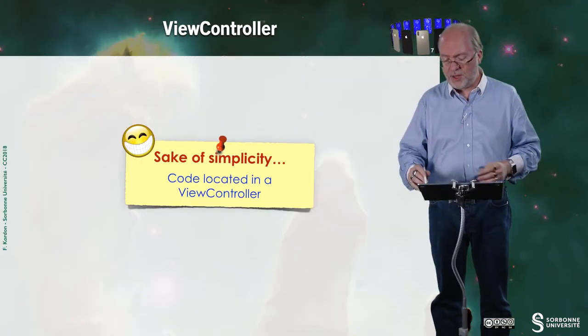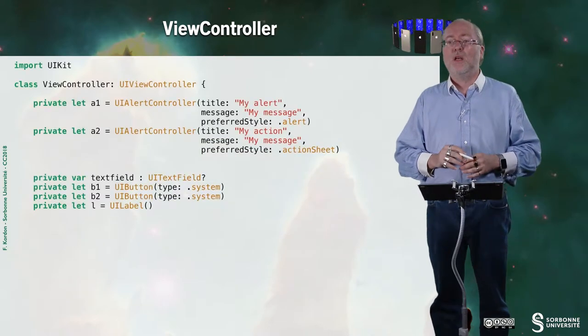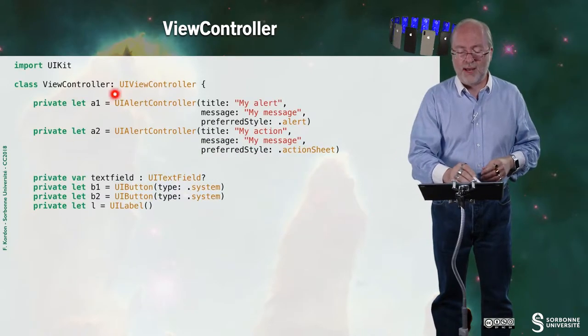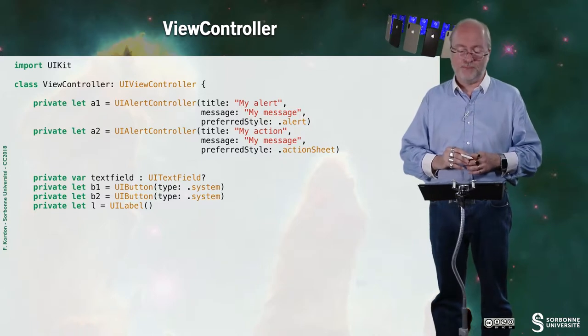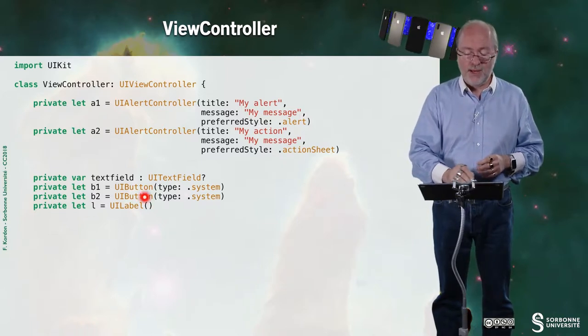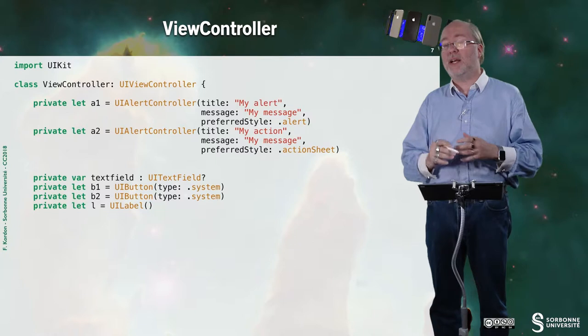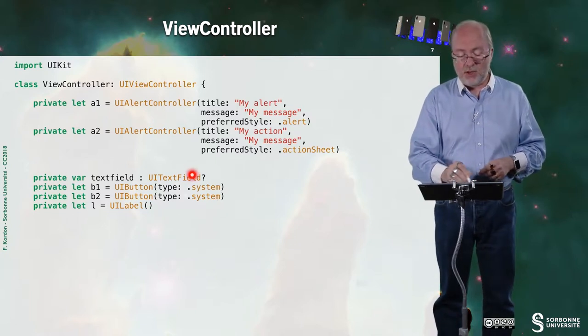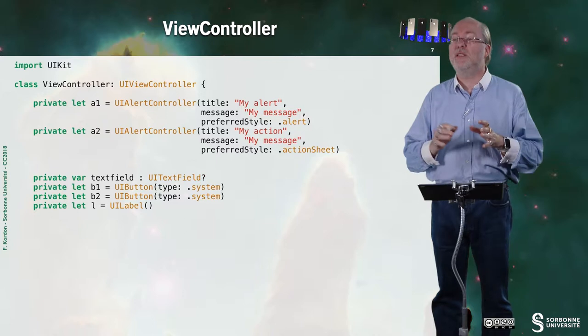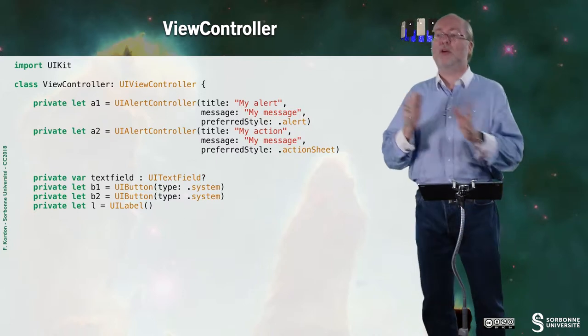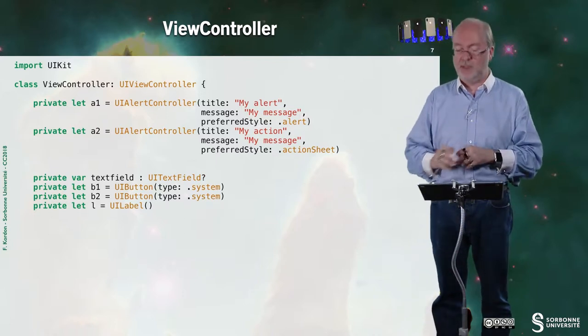Let's now have a look at the code itself. I'm sorry, I will not respect the MVC model. I will put everything in a view controller because otherwise it will introduce complexity where things are quite simple. So here, I create two UIAlertControllers. And here I have buttons and elements. I will not use this text field in my example, but I will make a comment. And this is why I put it in my code.